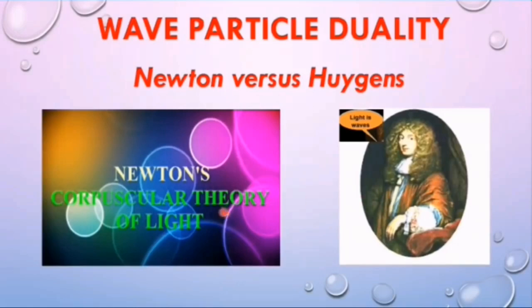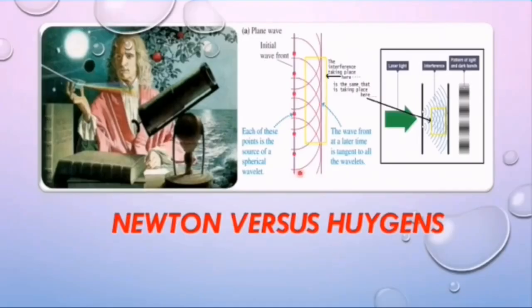Newton versus Huygens: whether light is a particle or a wave — the debate first began in the 17th century. Newton was convinced from different interpretations of experimental evidence that light was a particle. Huygens, on the other hand, said that light is a wave. According to Newton's corpuscular theory, every source of light emits large numbers of particles called corpuscles that travel in straight lines with high velocity. When these particles enter our eyes, an image of the object or sensation of vision is produced.